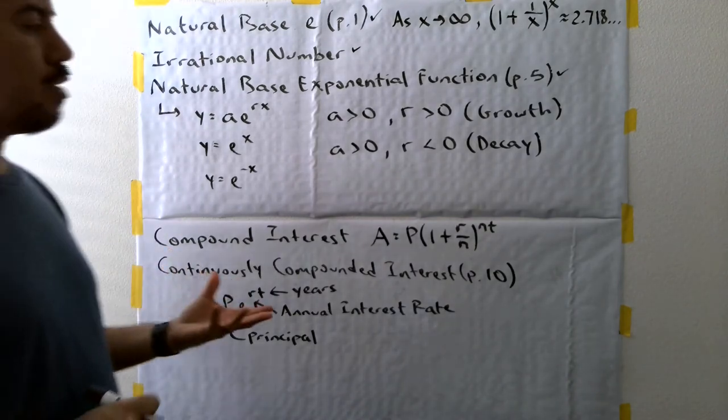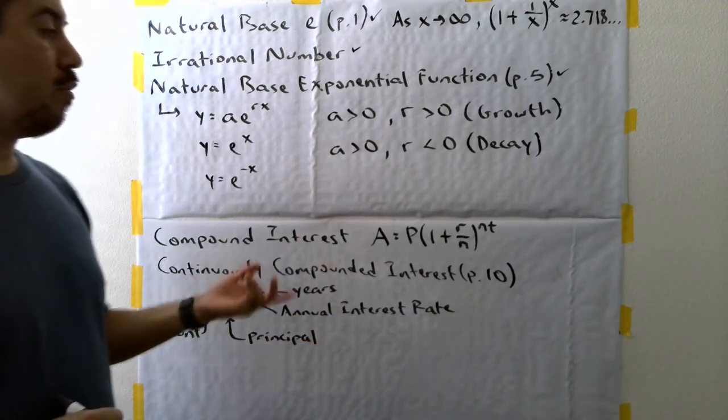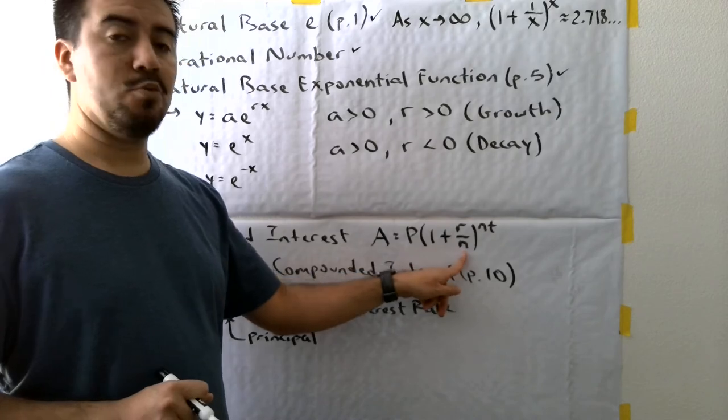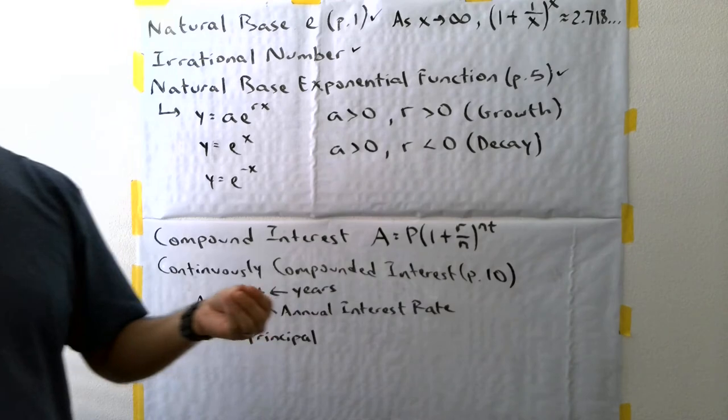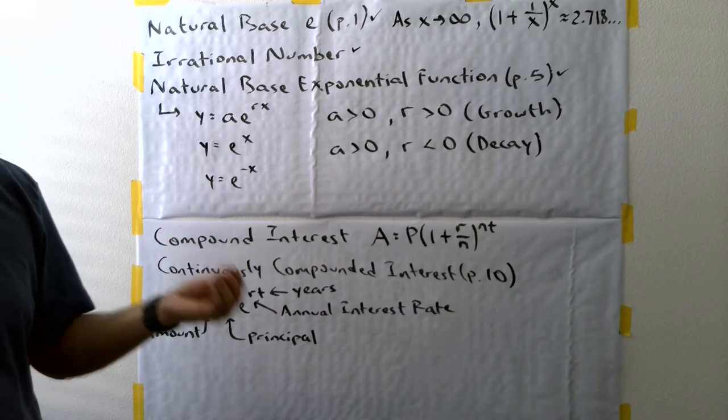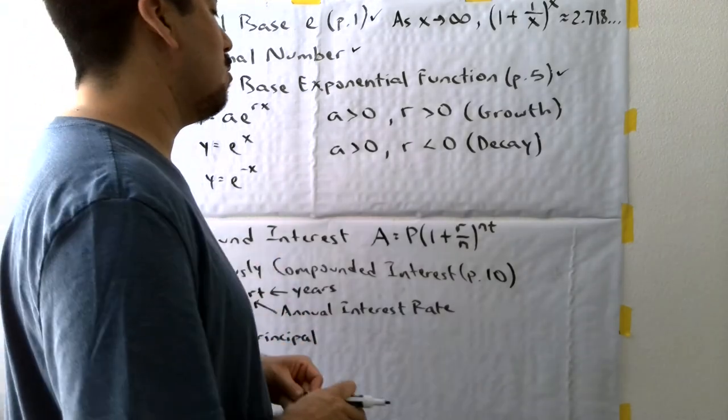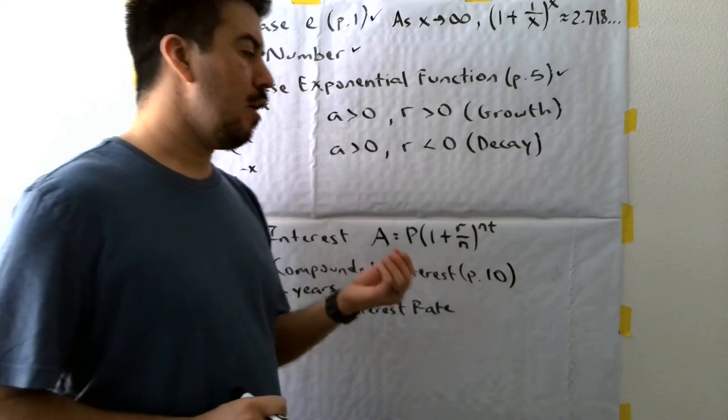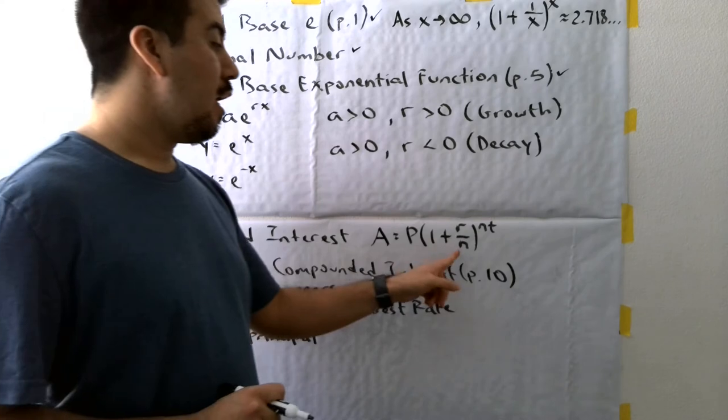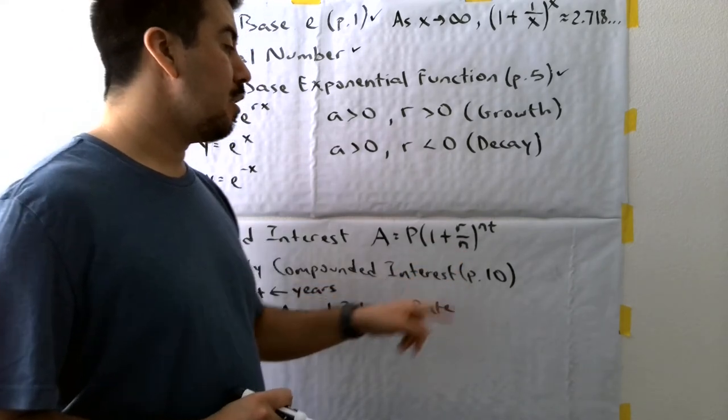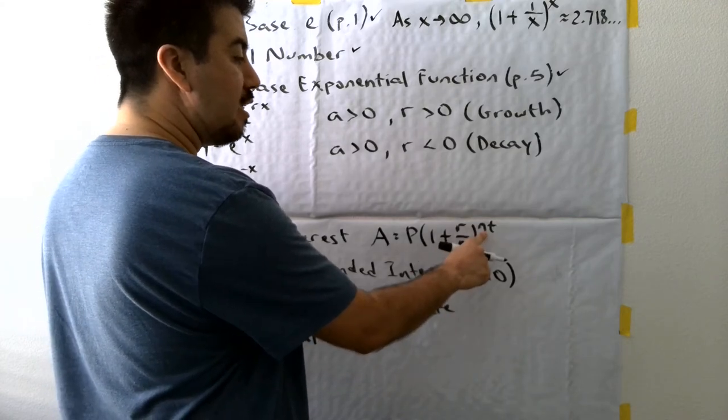But here's a question. What if it gets compounded more and more than one or two times in a year? We've dealt with problems where the n value was four, where it was compounded quarterly. But let's say it gets compounded every month. How about every week? How about every day? How about all the time? Basically, if this value keeps growing and growing and growing, it's a bigger and bigger number there and there.